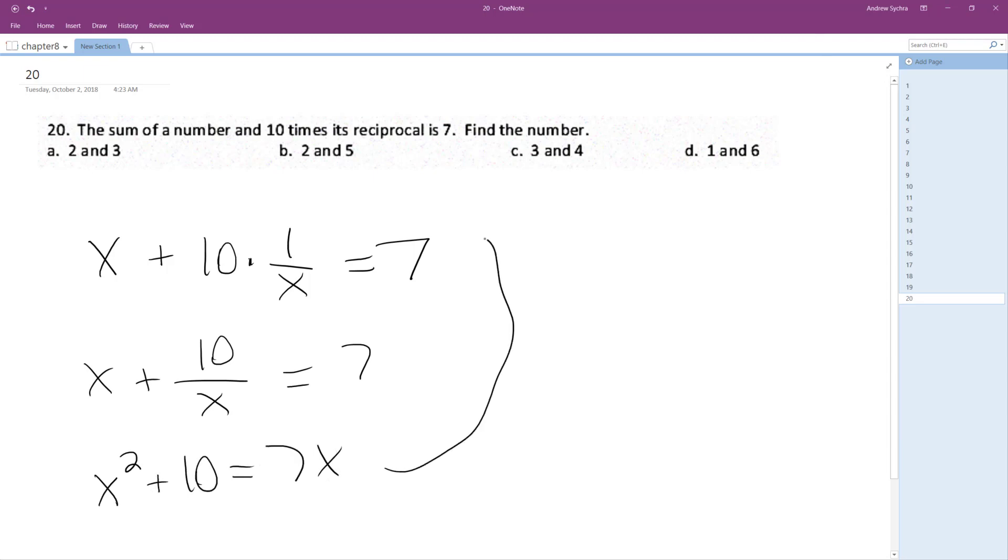All right, so move the 7 over to get x squared minus 7x plus 10 equals 0. We can factor this as x minus 2, x minus 5 equals 0. So x is equal to 2 and 5.